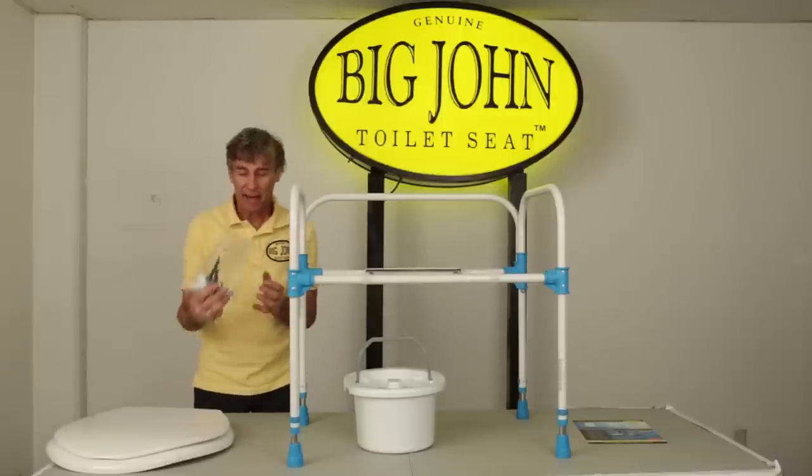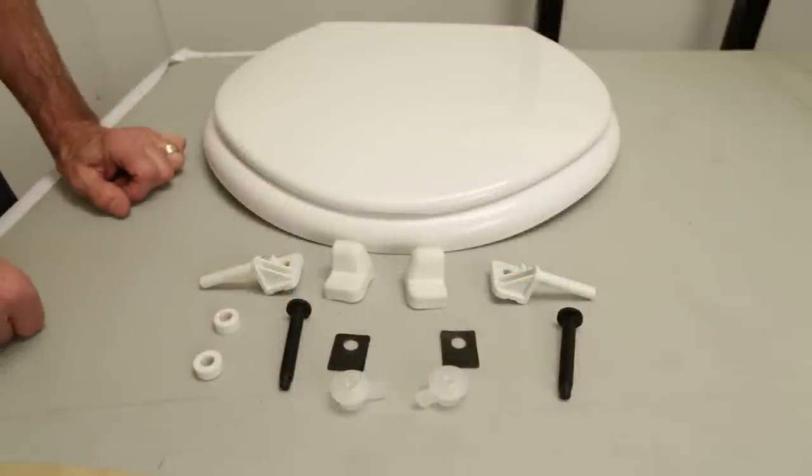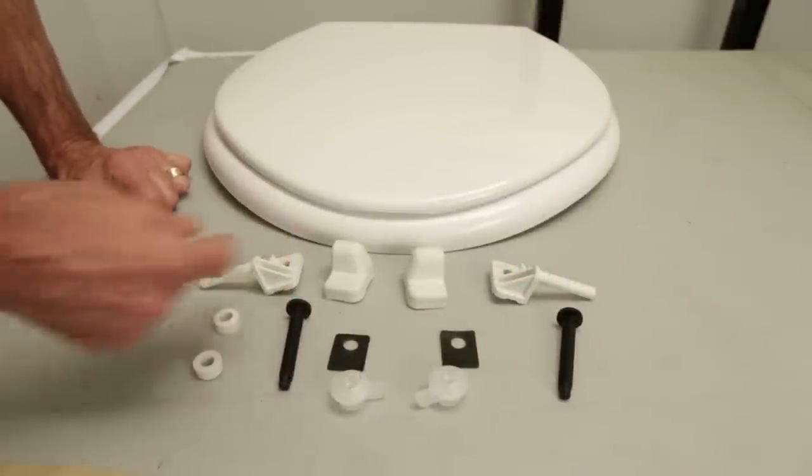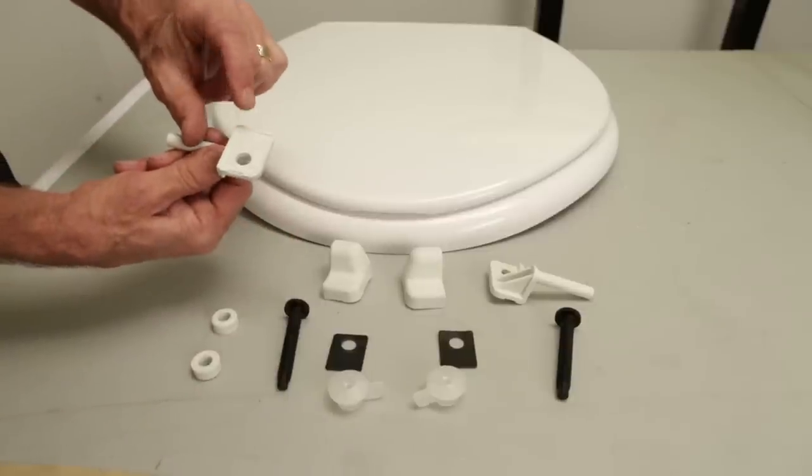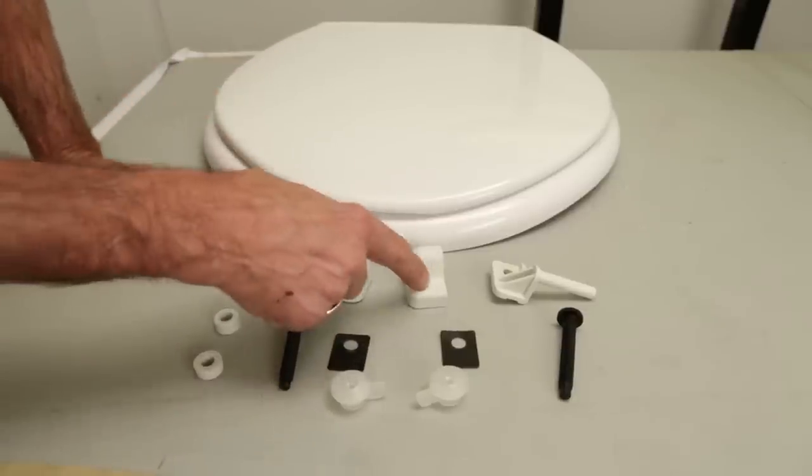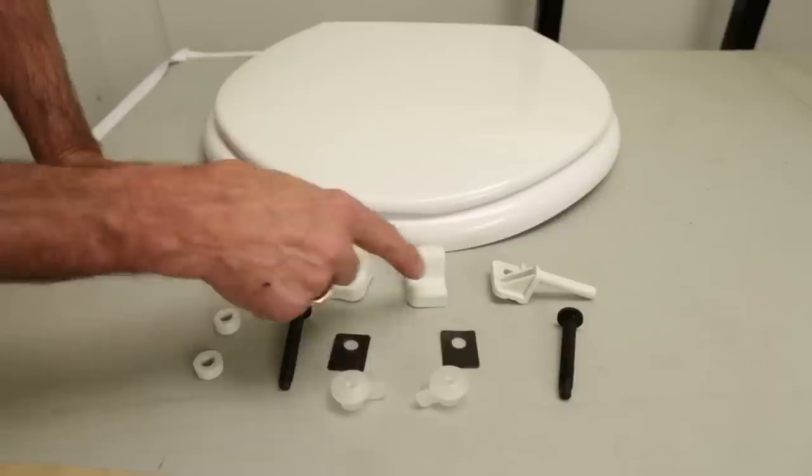It includes a hinge pack. The Big John hinge kit includes a right and left hinge marked right and left, plus a right and left hinge cover also marked right and left.